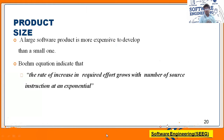The third factor is product size. The size of the software plays a major role in estimating software cost. A large software product is more expensive to develop than a small one. If the product size increases, it depends on the number of clients — the number of programmers and the number of programming lines will also increase.